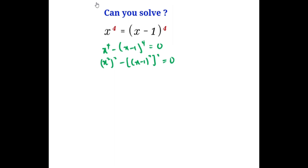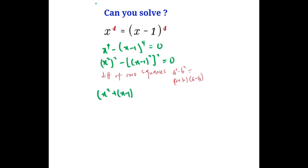Now using the method of difference of two squares, which is a squared minus b squared equals a plus b times a minus b. Using the same method here, we have x squared plus x minus 1 squared, times x squared minus x minus 1 squared, equals 0.